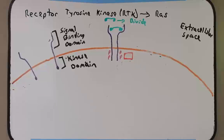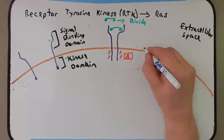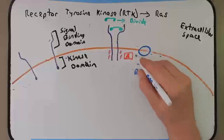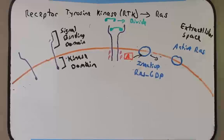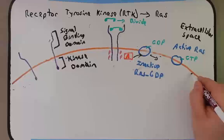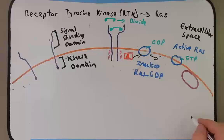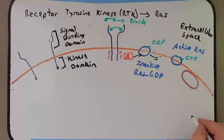Coming back to our pathway: the adapter protein that has interacted with the activated RTKs is going to change inactive RAS, which is bound to GDP, into its active form. Now we have active RAS with GTP bound to it. Once RAS is activated with GTP, it will trigger the phosphorylation of the next protein. It's important to note that RAS itself does not do the phosphorylation — rather, it triggers events that allow for the phosphorylation of the next protein.